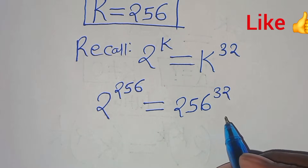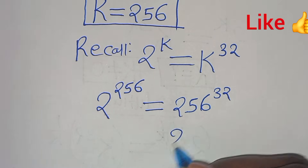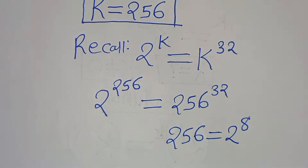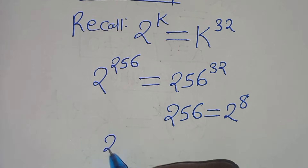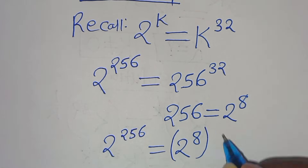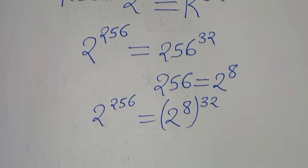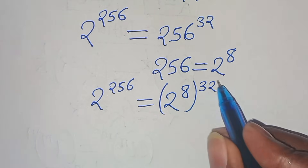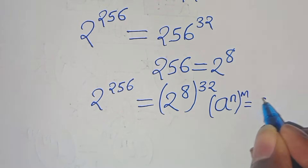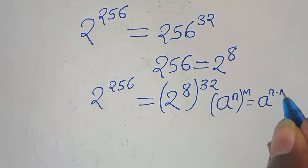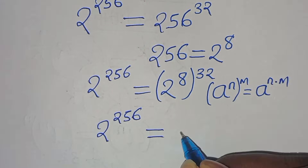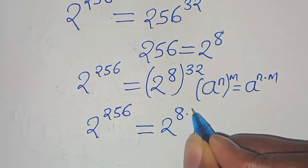From here, we can express 256 as 2 to the power of 8. So we have 2 to the power of 256 equals 2 to the power of 8, raised to the power of 32. This is in the form a to the power of n raised to the power of m, which equals a to the power of n times m. So the right side becomes 2 to the power of 8 times 32.